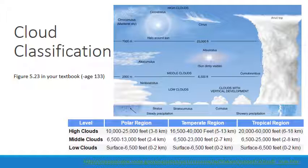Low clouds form nearer to the Earth's surface, up to an altitude of about 6,500 feet, and are generally composed of water droplets. These altitudes may vary somewhat according to season and latitude. For example, at high polar latitudes and during cold winter months, high clouds generally occur at lower altitudes. Some clouds extend upward to span more than one height range and are called clouds of vertical development.